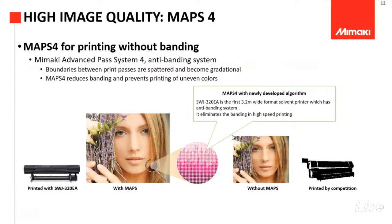Ini sudah menggunakan Maps 4. Maps 4 ini adalah fitur Maps terbaru dari Mimaki. Maps itu berfungsi sebagai fitur yang bisa mengurangi tingkat banding. Jadi dia akan melakukan printing secara acak, tujuannya supaya perpindahan step dari sub-scan awal dan sub-scan selanjutnya itu bisa terbiaskan sehingga menghasilkan gambar yang lebih halus.